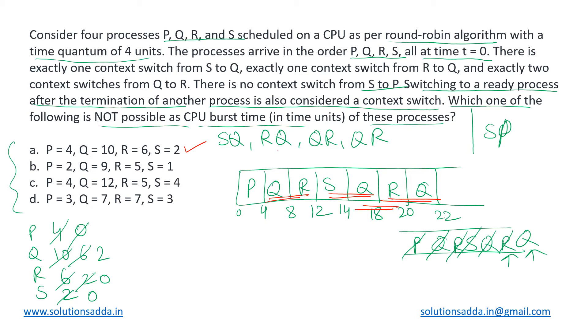Now let us look at option 2. The given burst times are 2, 9, 5, and 1. Let us again construct the Gantt chart for this option and maintain the queue. We will start with P and execute it up to 2 because it is having only two units of burst time. It is pushed, all are pushed, and it is popped off. No need to push again.